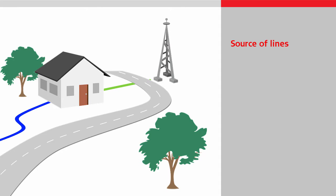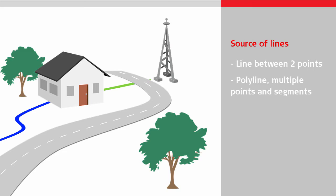Let's take a look at where our line might come from. As mentioned in the Staking to a Line Overview video, the line can simply be a line between two points, or a polyline with multiple points and segments, which can be made up of straights and arcs. To be used in the Stake to Line app, the line must exist in a Normal Job.